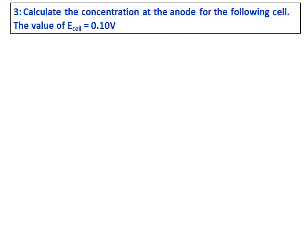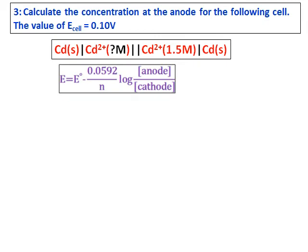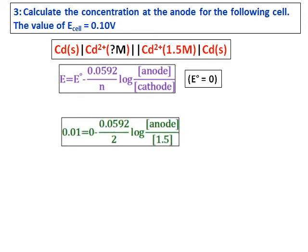Calculate the concentration of the anode for the following cell. The value of E cell is given. The cell is a cadmium cell with a concentration of 1.5 molar at the cathode, and we have to calculate the concentration of the anode. Use the formula E equals E0, with the anode concentration on top and cathode at the bottom. Since the electrodes are the same, E0 equals zero. Substitute all the values and the concentration at the anode comes as 0.69 molar.